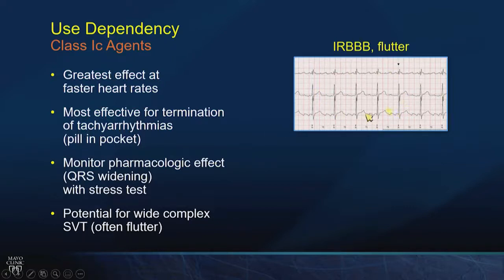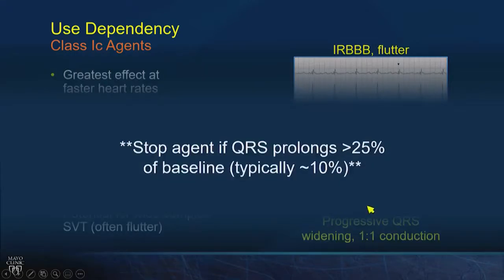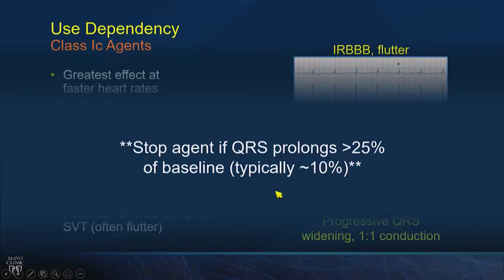Here's an example: this patient was in AFib, we gave them flecainide, it organized their AFib to atrial flutter — you can see the flutter waves and a subtle R prime in V1. Then they exercised on a treadmill, conducted 1-to-1, and ended up with a wide-complex rhythm. A stress test can prolong QRS duration. If you see greater than 25% prolongation, stop the drug or reduce the dose. You want to see a little QRS prolongation to confirm the drug is working — about 10% is fine — but bundle branch block, heart block, or excess prolongation beyond 25% means back off.